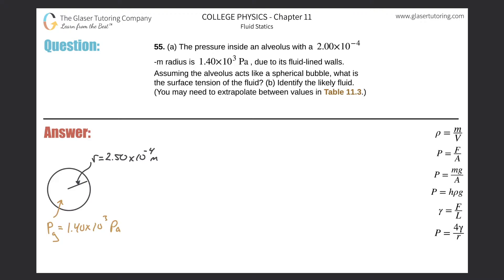Number 55, letter A. The pressure inside an alveolus with a 2 times 10 to the minus 4 meter radius is 1.4 times 10 to the 3 pascal due to its fluid-lined walls. Assuming the alveolus acts like a spherical bubble, what is the surface tension of the fluid?